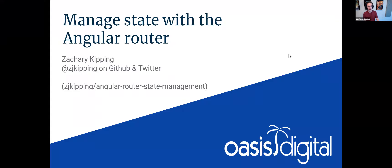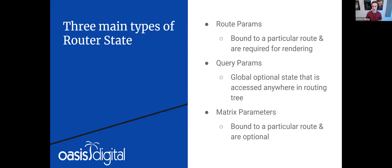So starting off, hopefully everyone is aware of this, but there are three main types of router state you can deal with in Angular. There are route params, which are essentially bound to a particular route and are required for rendering a specific component. And there are also query parameters, which are global optional state that can be accessed anywhere — in your services, your components, or basically anywhere inside your routing tree.